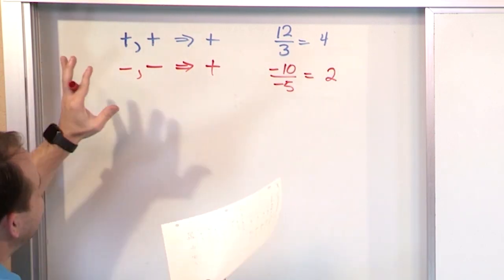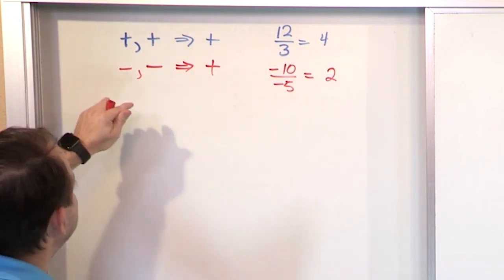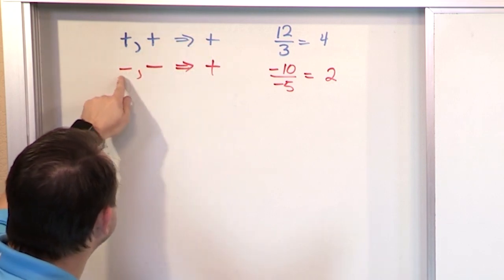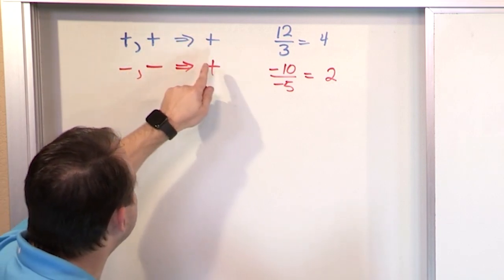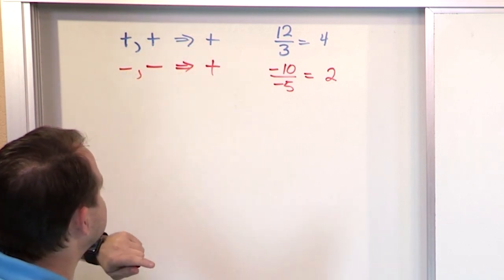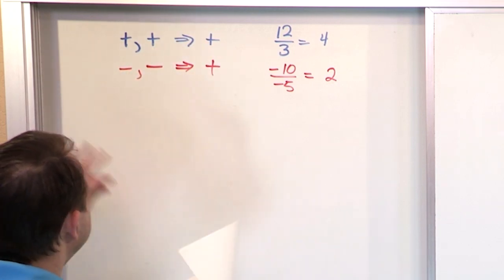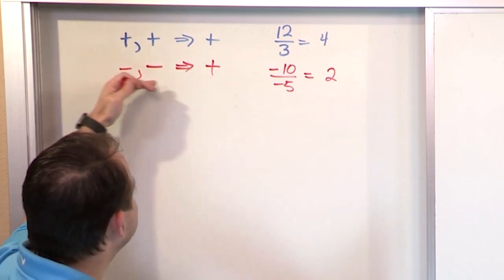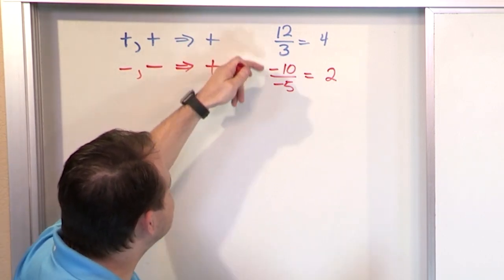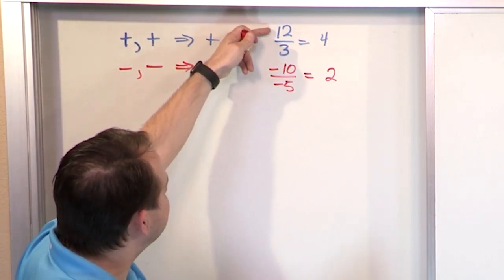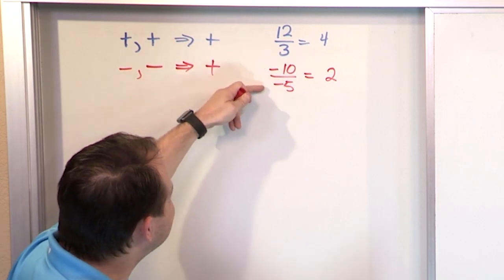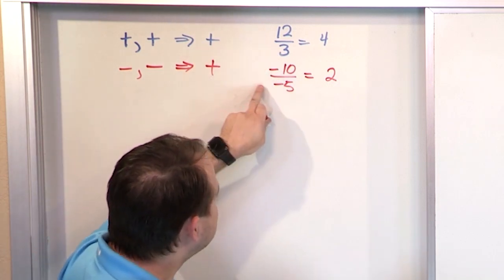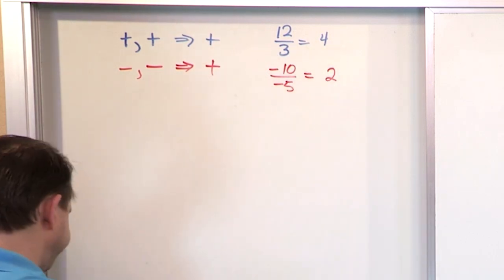So these rules are exactly the same as for multiplication. Multiply positive times positive, get positive. Negative times negative also get positive. So it's the exact same thing when applying it to division. When you're both positive or both negative and you're dividing them, you always get positive answers.